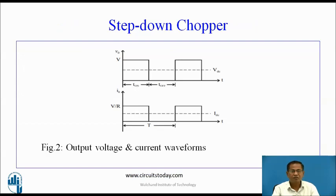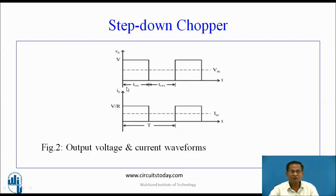These are the waveforms of the step-down chopper, showing output voltage and output current. During T-on, the chopper switch is in the conducting state, so input voltage appears across the output and V_0 equals V. During T-off, the chopper switch is non-conducting, so V_0 equals zero. The dotted line shows the average DC voltage. During T-on, the current I flows through the conducting switch with value V/R, and during T-off, the current is zero.